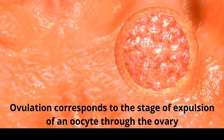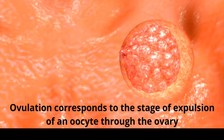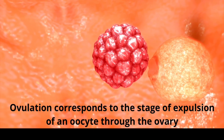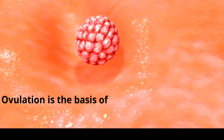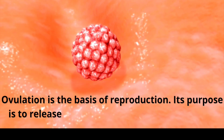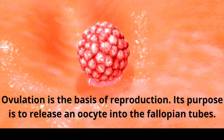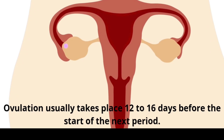Ovulation corresponds to the stage of expulsion of an oocyte through the ovary. Ovulation is the basis of reproduction. Its purpose is to release an oocyte into the fallopian tube. Ovulation usually takes place 12 to 16 days before the start of the next period.